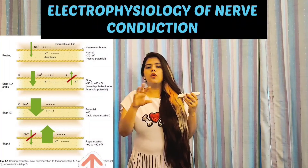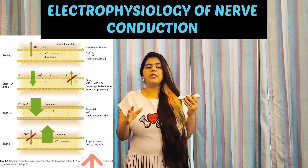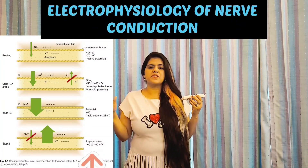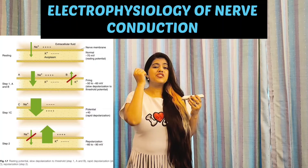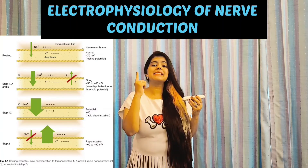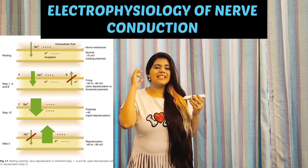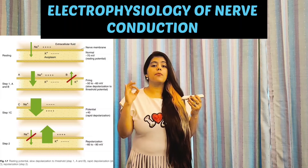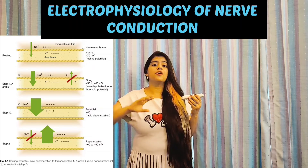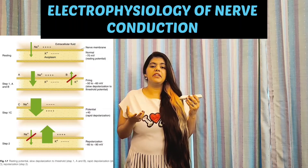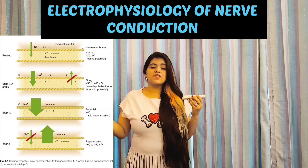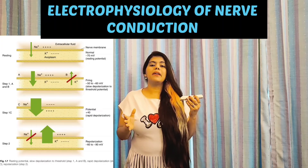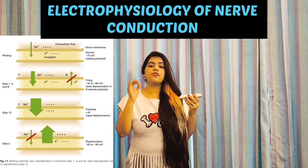The whole process takes place in just 1 millisecond (ms), in which depolarization takes 0.3 ms while repolarization of the nerve takes 0.7 ms. That's all about this topic regarding the electrophysiology of nerve conduction.